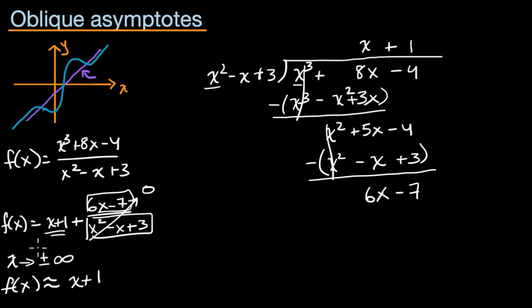So there you have it. We figured out our oblique asymptote in this case. The oblique asymptote is y equals x plus 1.